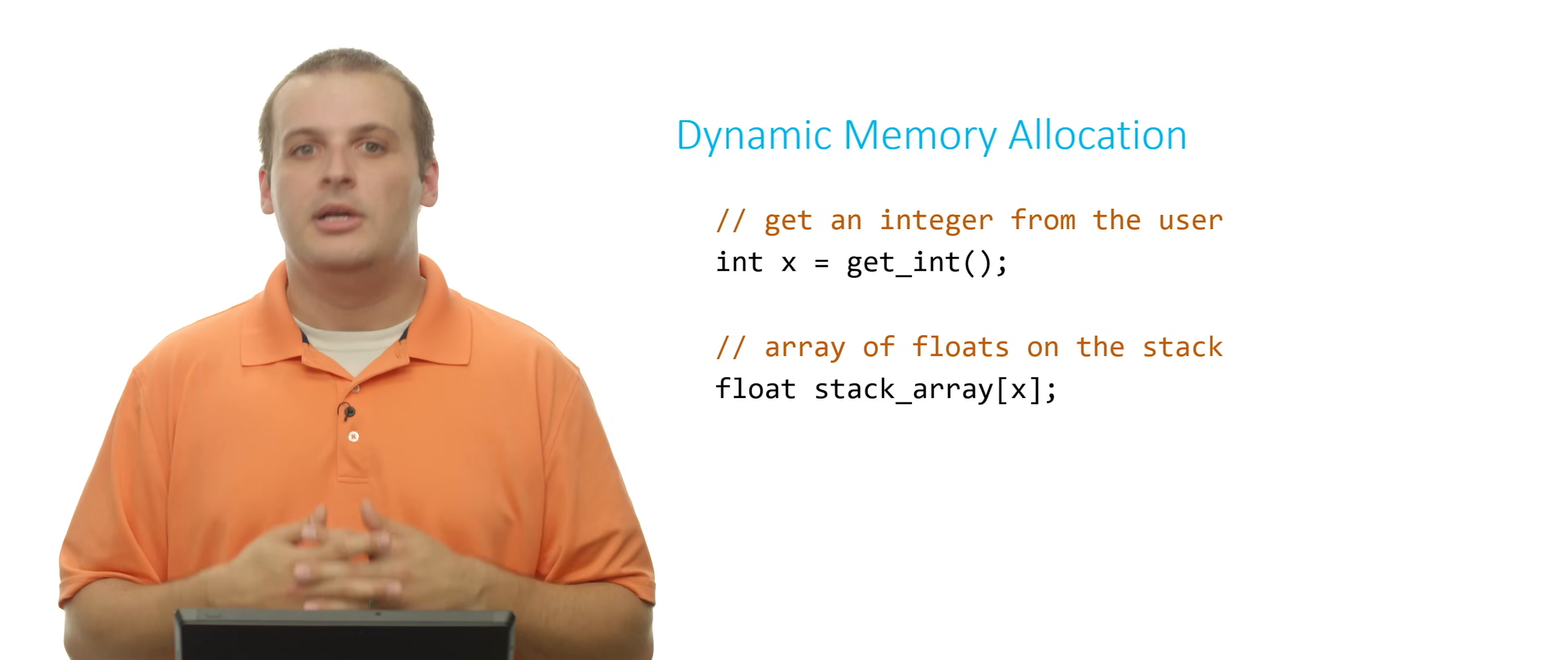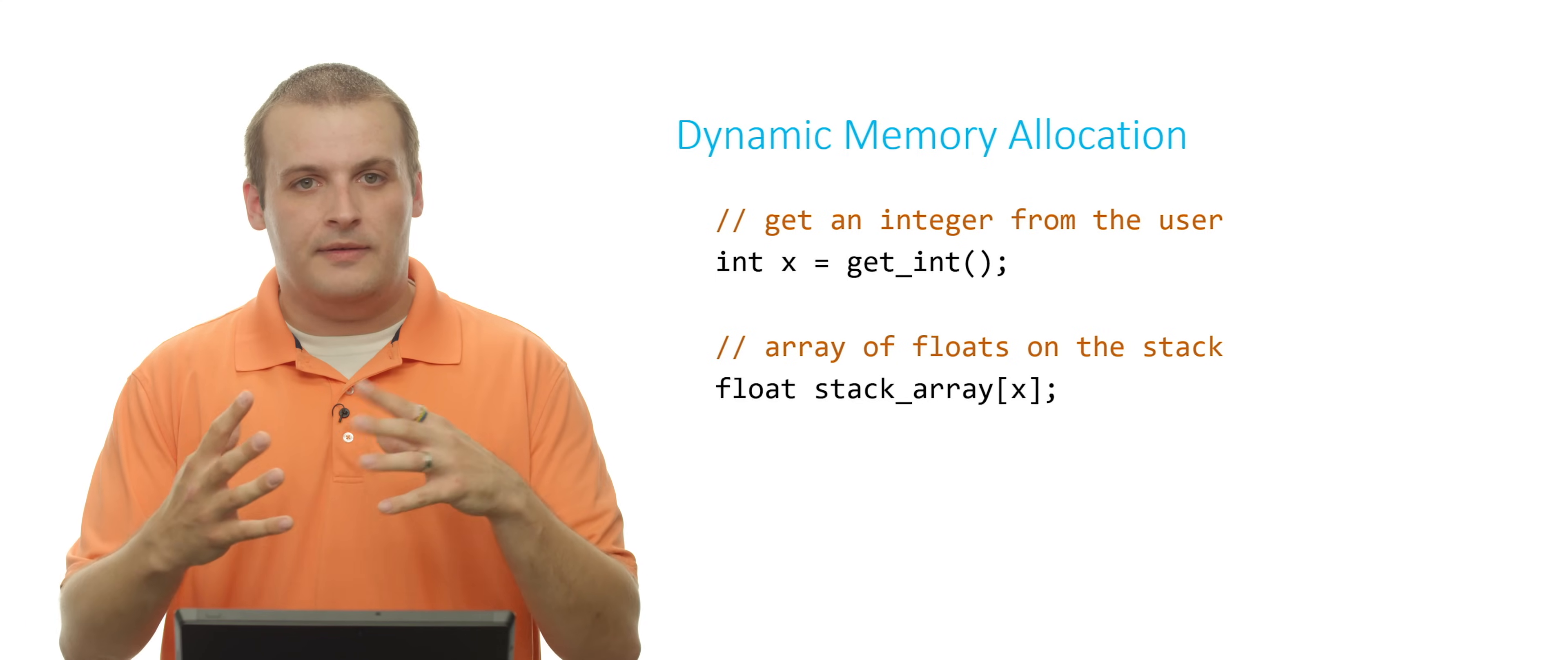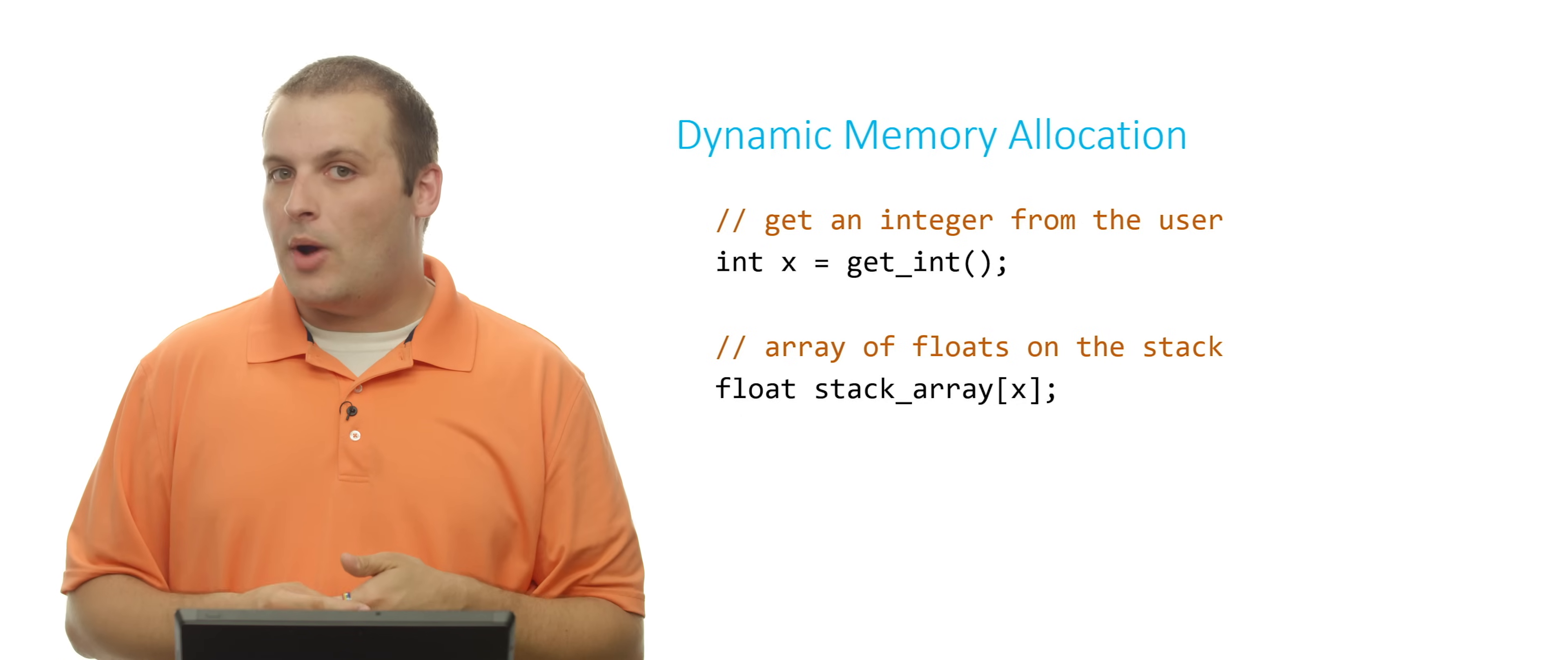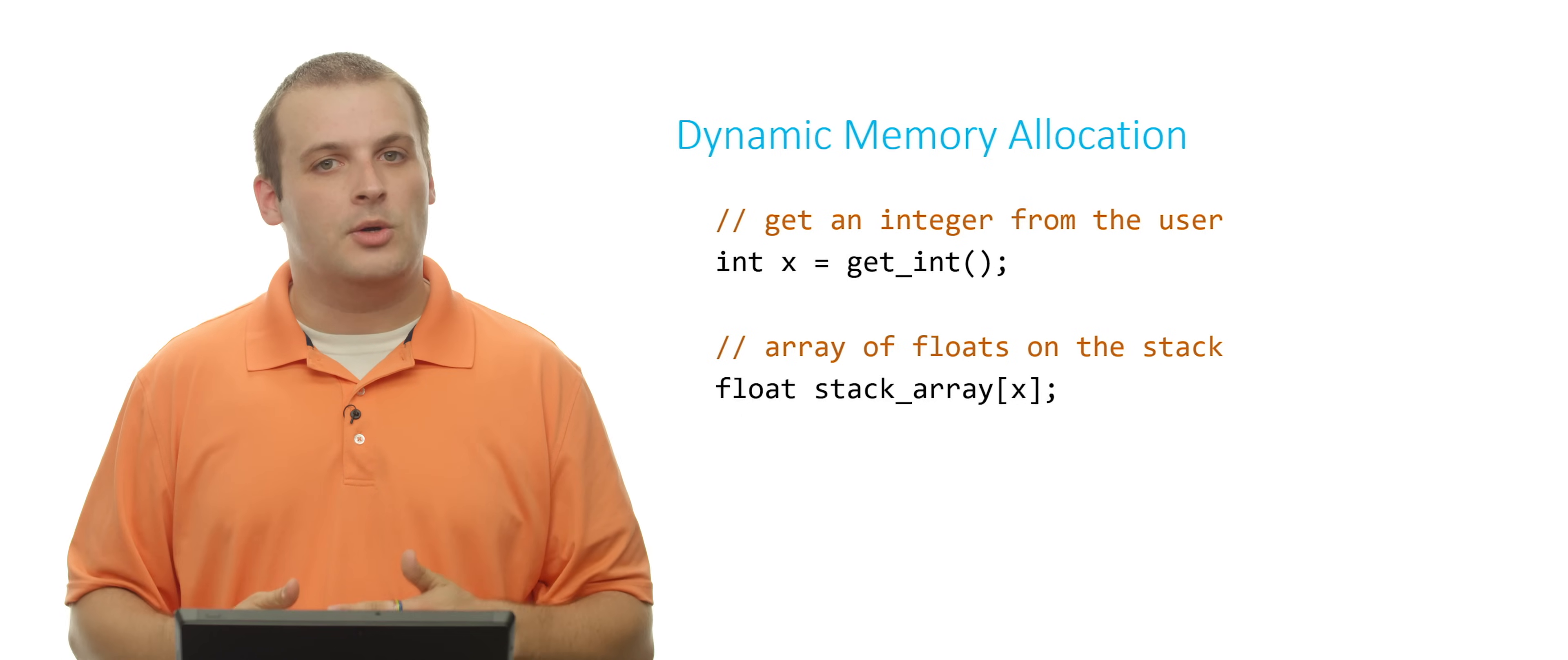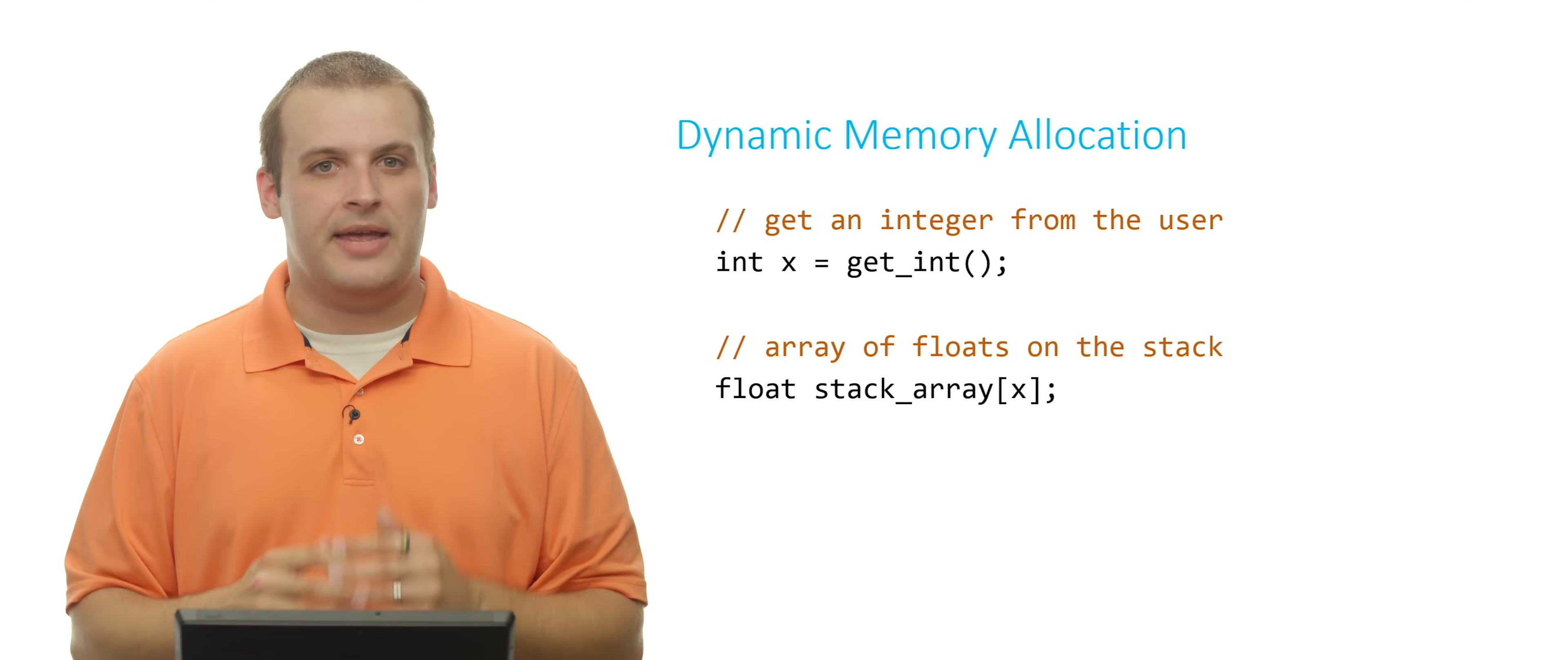If you're using a very old version of C, this was actually previously not allowed. But you can do this. We can basically get a variable-sized array on the stack, which we're doing here, because we don't know how big it's going to be in advance. We're just getting it from the user. But this is how we would declare an array of floats on the stack, where the number of items in that array is the number the user just gave us.